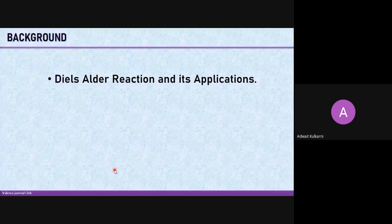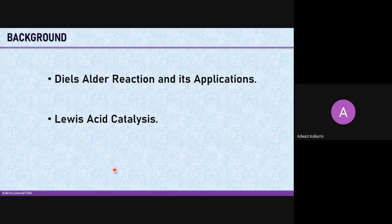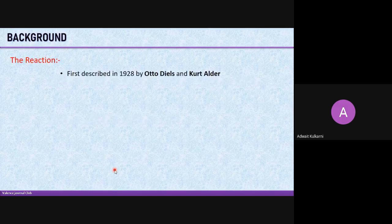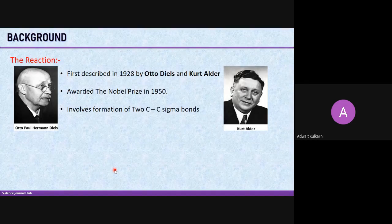I would like to discuss the Diels-Alder reaction itself and its applications, and Lewis acid catalysis. The reaction was first described by Otto Diels and Kurt Alder in 1928, and they were awarded the Nobel Prize in 1950 for their amazing work. This is amazing because it involves the formation of two C-C sigma bonds, which is of great importance to synthetic chemists.